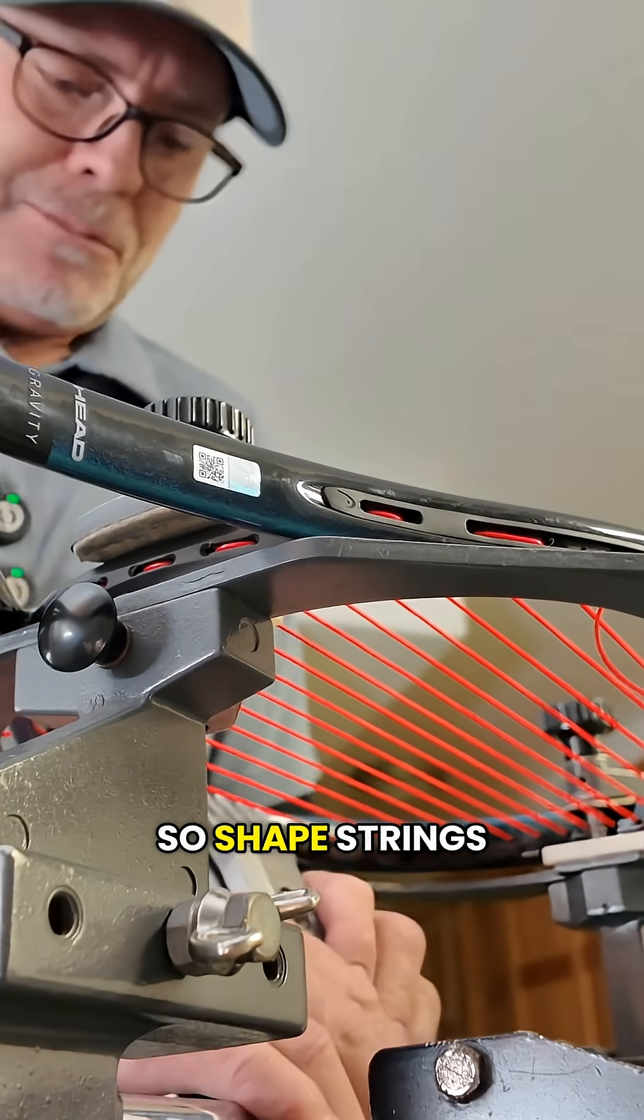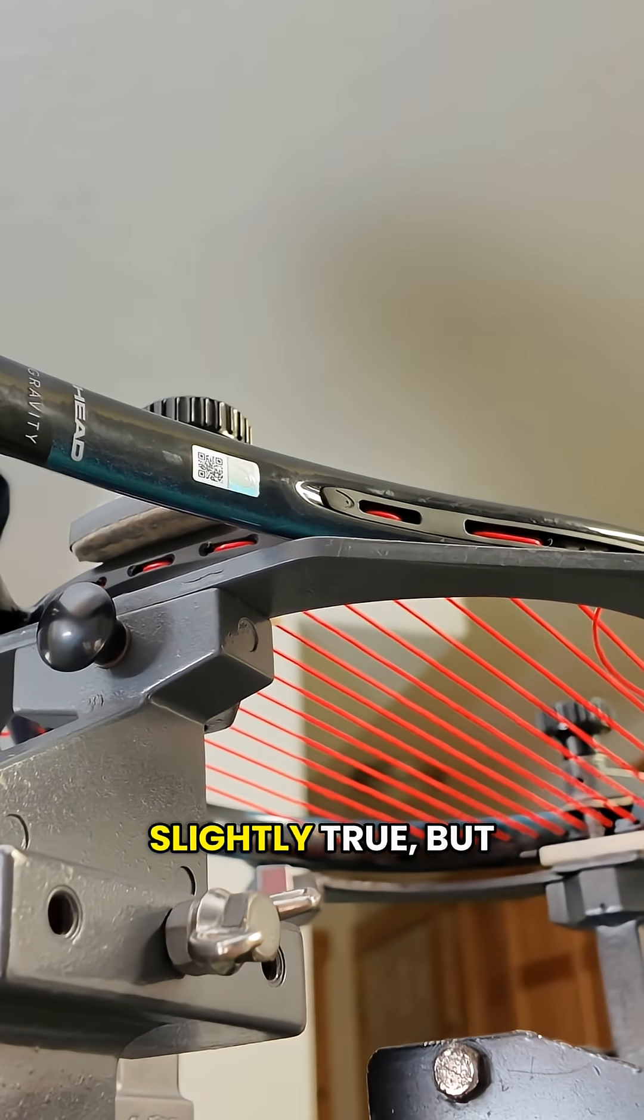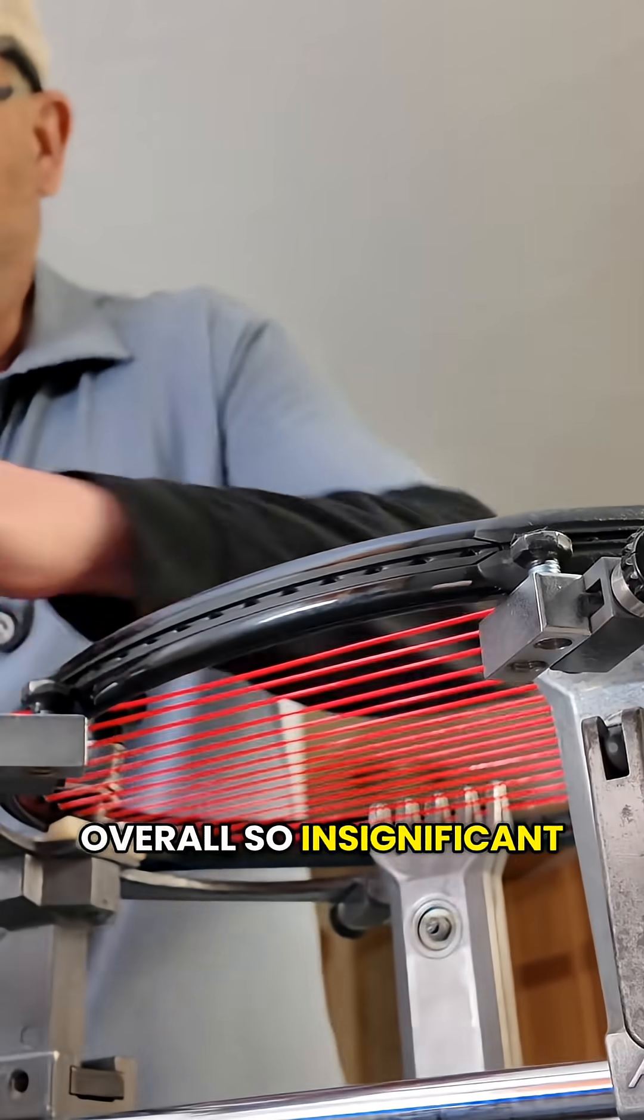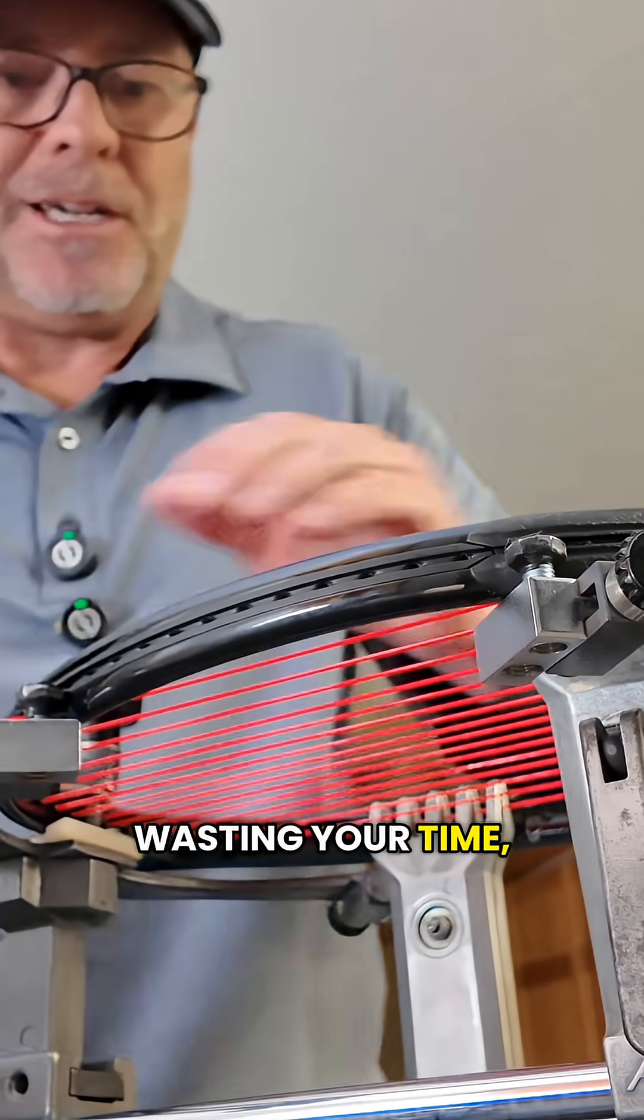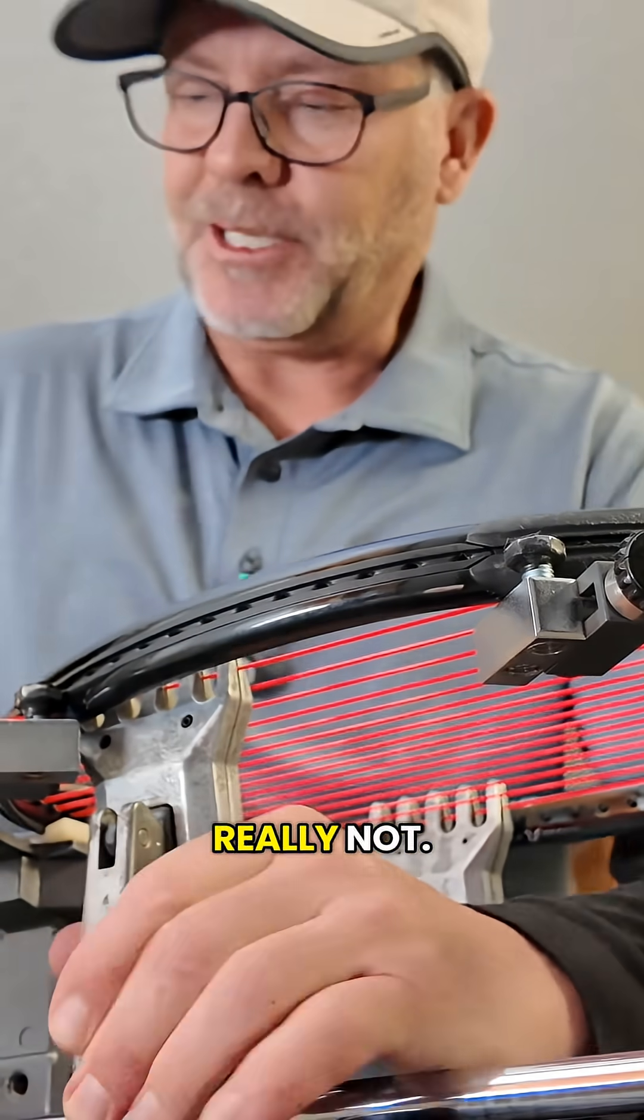So shaped strings offer more grip and spin potential. Slightly true, but overall so insignificant, I think you're wasting your time thinking that a shaped string is going to give you more spin. It's really not.